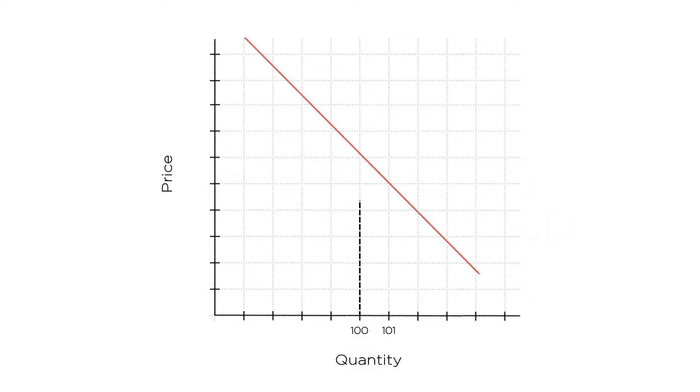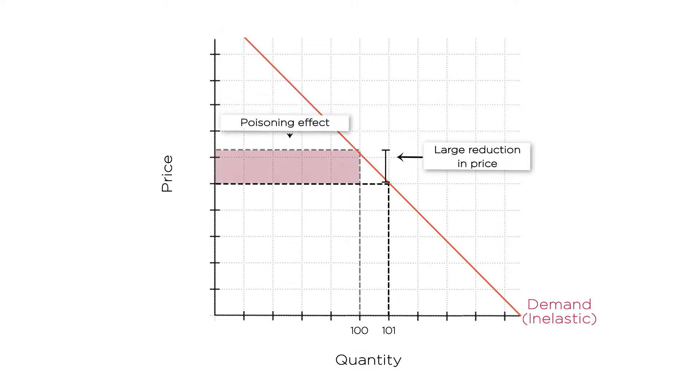Now think about a good with a very inelastic demand, and therefore a relatively steep demand curve. For a good like this, to sell one more unit, the monopolist must lower the price a lot. In this case, the poisoning effect is large.